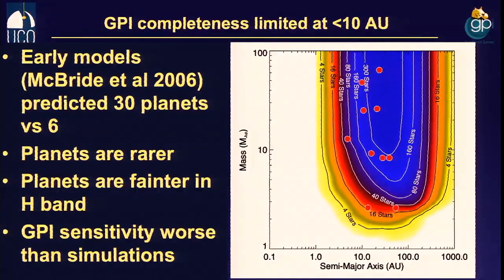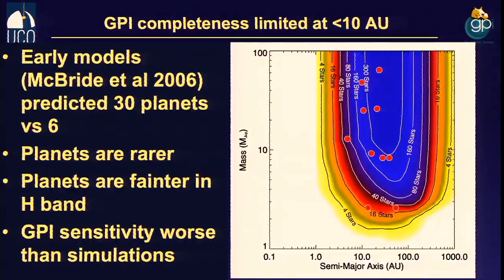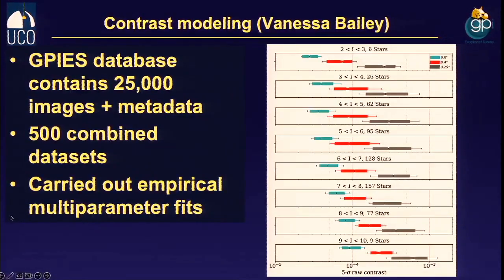Our early model said we'd find 30 planets; we found 6. Three reasons: planets are rarer than simulations predicted — we assumed the giant planet distribution didn't roll over at 5 AU but kept going, which wasn't even defensible in 2005. Planets are also a little fainter in H-band than we expected due to atmospheric details. And GPI underperformed compared to its design spec — designed to be about 100 times more sensitive than Keck, it ended up about 10 times more sensitive, partly because Keck also improved.